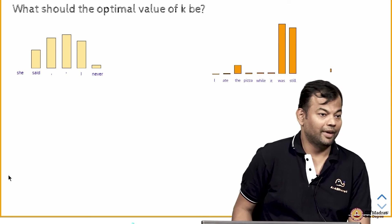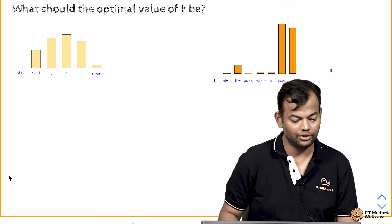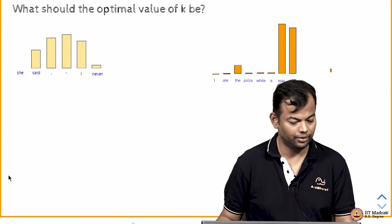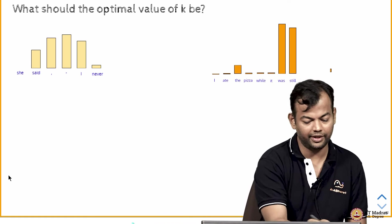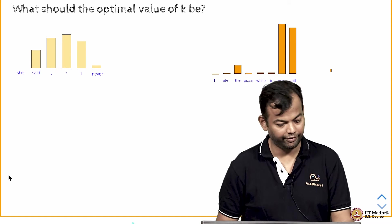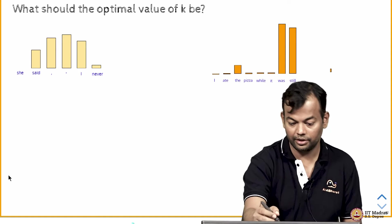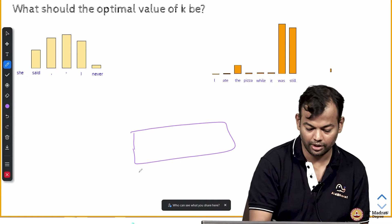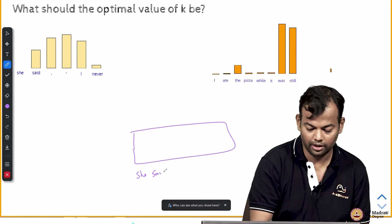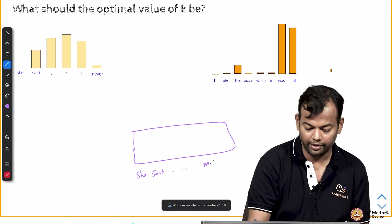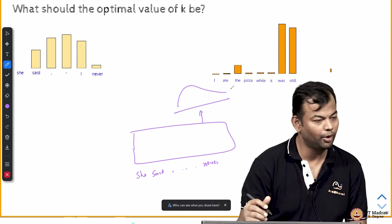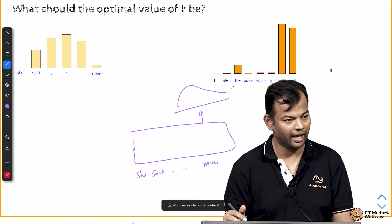Now, the question is what should the optimum value of K be? Let us look at these two examples. So, this is the sequence which has been generated so far: she said I never. Now you pass this—I keep drawing this diagram again and again because I want it to register. She said never, all of this has been passed to the network and now it has generated a probability distribution over the entire vocabulary.